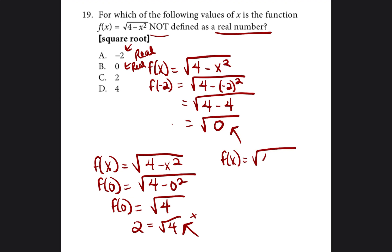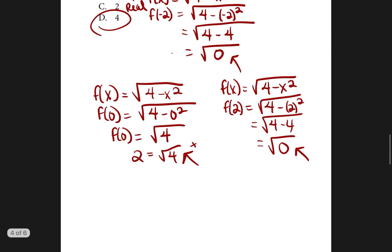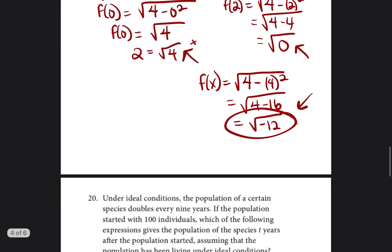For answer C, f(2) = √(4 − 2²) = √(4 − 4) = √0. Not a negative number, so C is also real. I'm assuming D will be not real, but always test it — don't assume. For D, f(4): 4² = 16, so 4 − 16 = negative 12. There it is — a negative number under the square root. That is not a real number. So our answer is D.